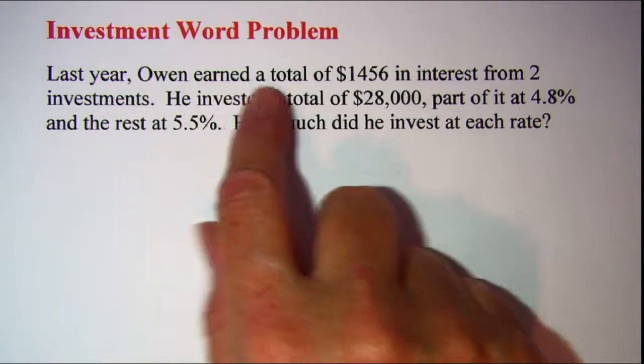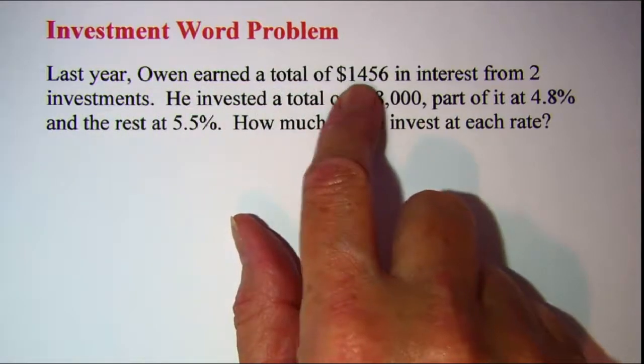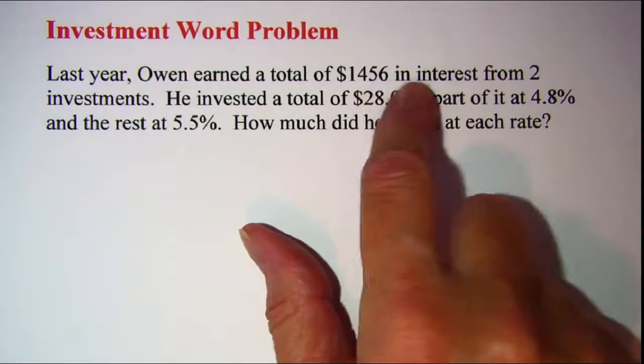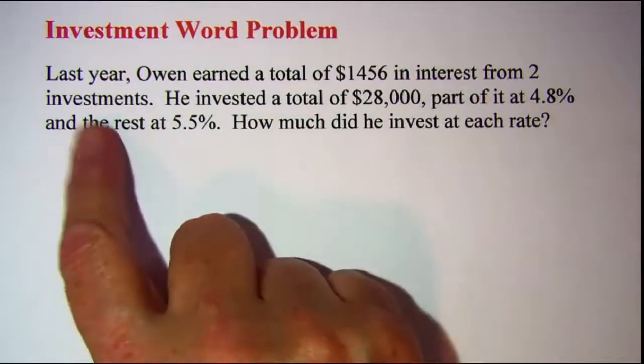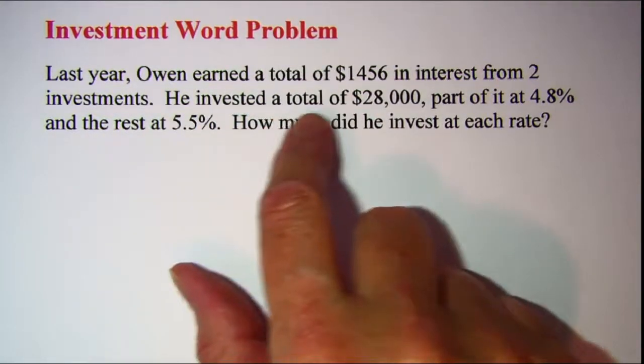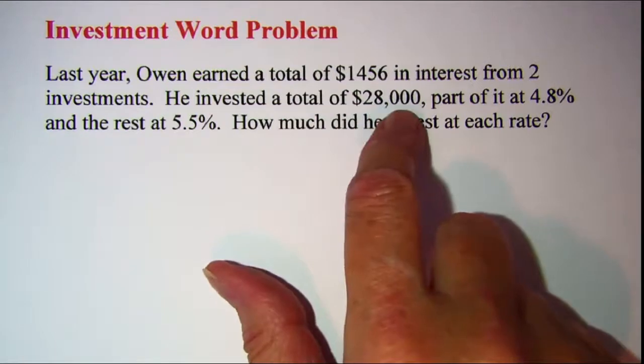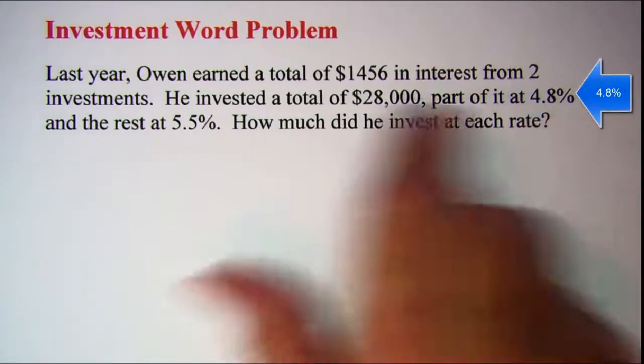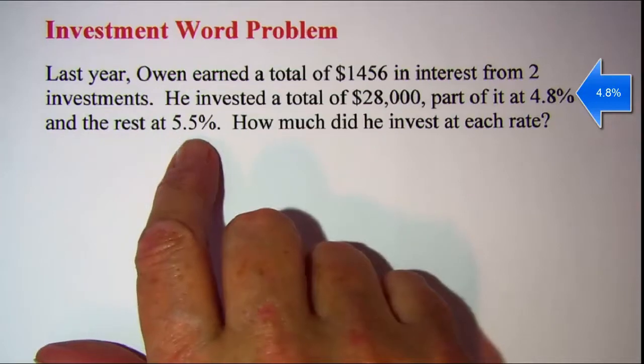Last year Owen earned a total of $1,456 in interest from two investments. He invested a total of $28,000, part of it at 4.8% and the rest at 5.5%.